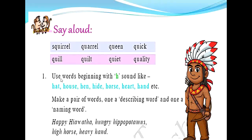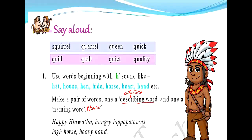The next task is to use words beginning with the H sound — like hat, house, hen, hide, horse, heart, hand, etc. — and make a pair of words: one a describing word and one a naming word. Describing words are adjectives, which describe a noun. Naming words are nouns. So you need to write a pair that has an adjective as well as a noun.